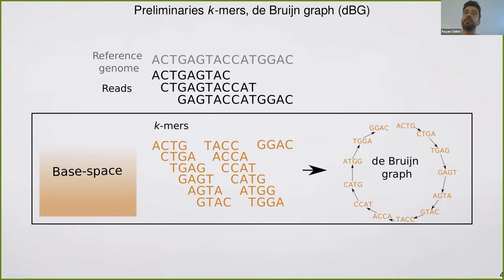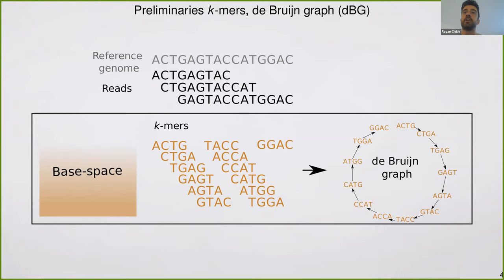I will refer to the term base space because it will be in comparison to minimizer space introduced later. The context here is not so much sequencing data, but instead reference genomes. If you have a reference genome, it's possible to extract all the k-mers from it and construct a classical de Bruijn graph. However, this is an expensive step if the genome or collection of genomes is large.